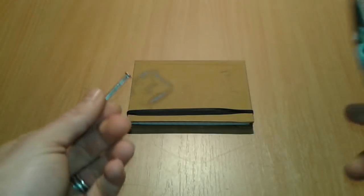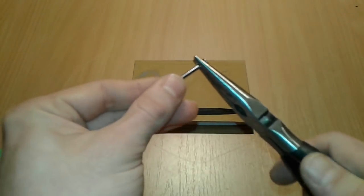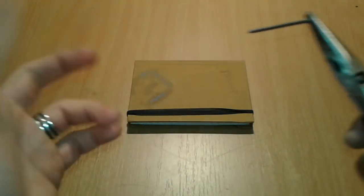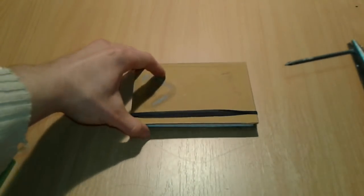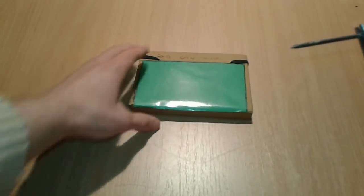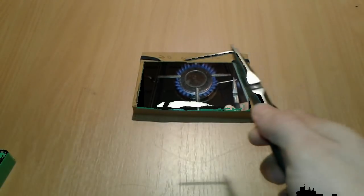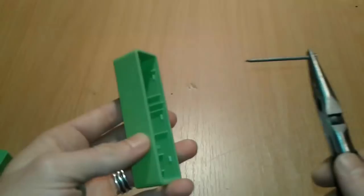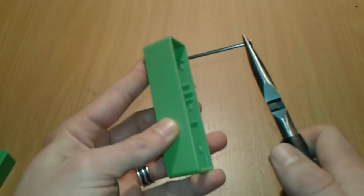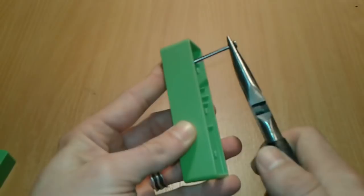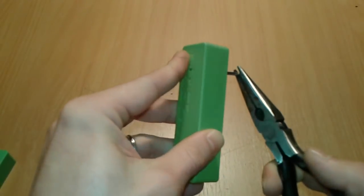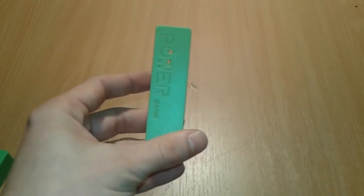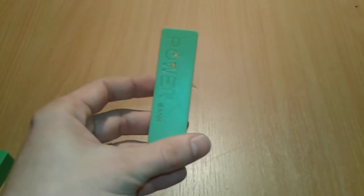We're going to take the plier and we're going to be very careful when we're working with fire and our oven. We're going to turn the oven on, heat the nail, and punch some holes into our case. We're going to make two holes for any switch.